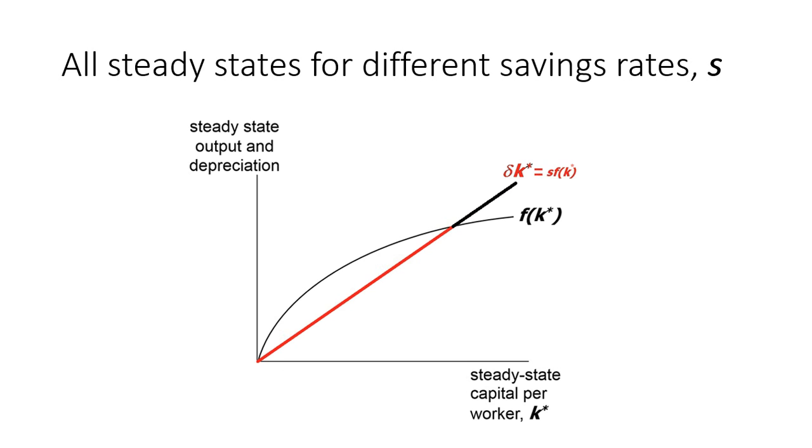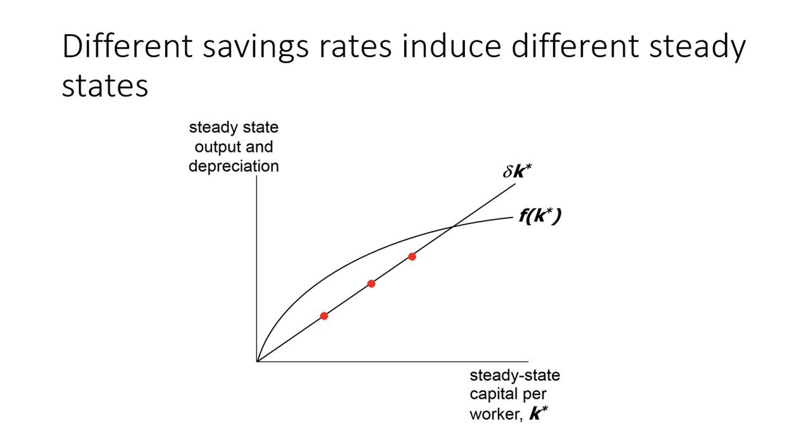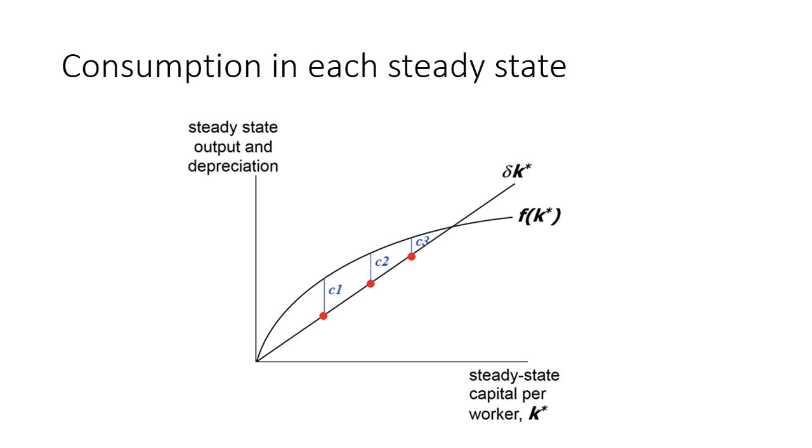So let's just go back and look at those three steady states in particular and ask ourselves, how much consumption do we get to enjoy in each of these steady states? Because remember, this is equal to savings in the steady state, which means the value of consumption must just be the difference between output and the savings. So here we can see these three different levels of consumption that correspond to these three different steady states.